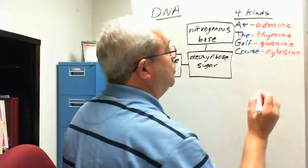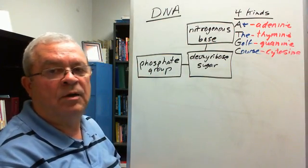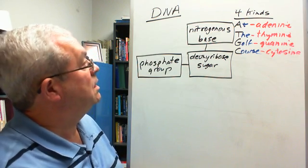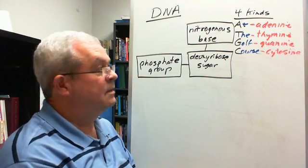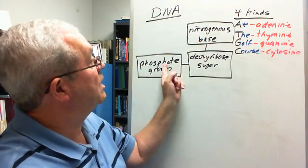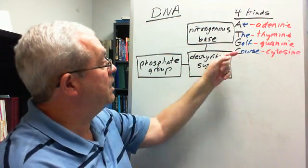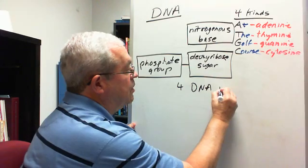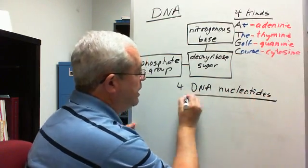You will probably be called upon to spell out most or all of those, so you need to be able to spell them out. That means there are four kinds of DNA nucleotides: a phosphate-sugar-A, a phosphate-sugar-T, a phosphate-sugar-G, and a phosphate-sugar-C. So there are four different DNA nucleotides.